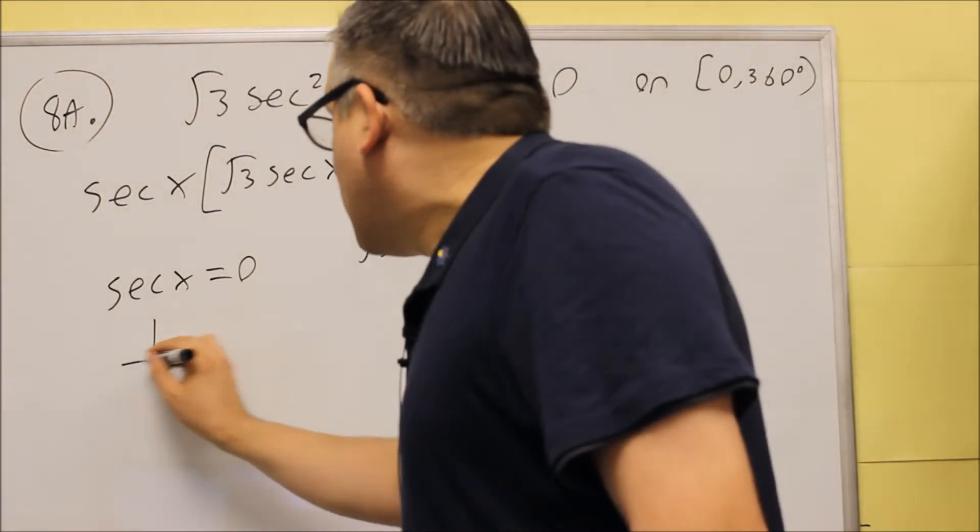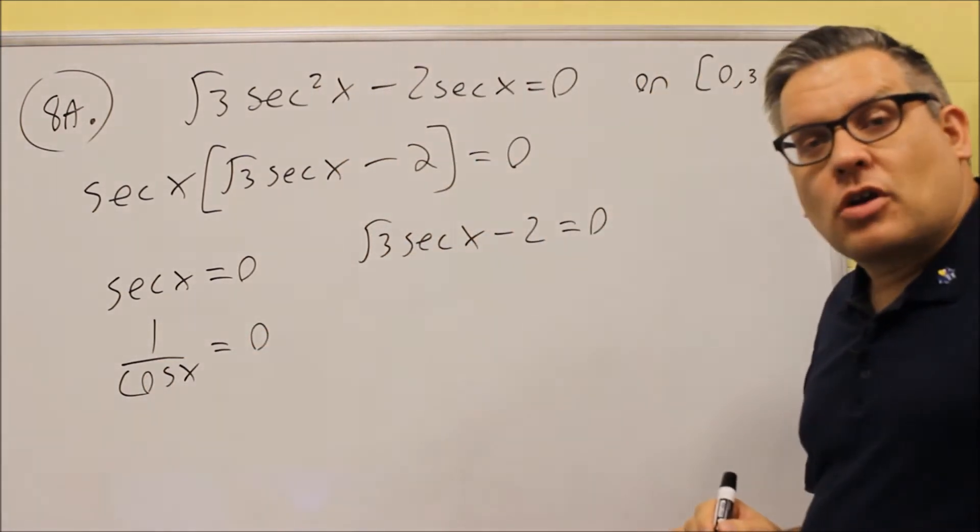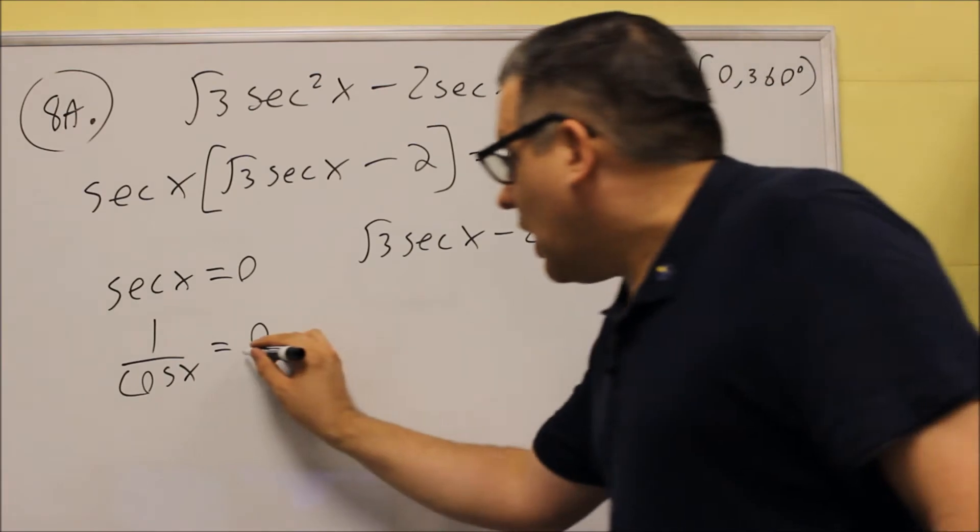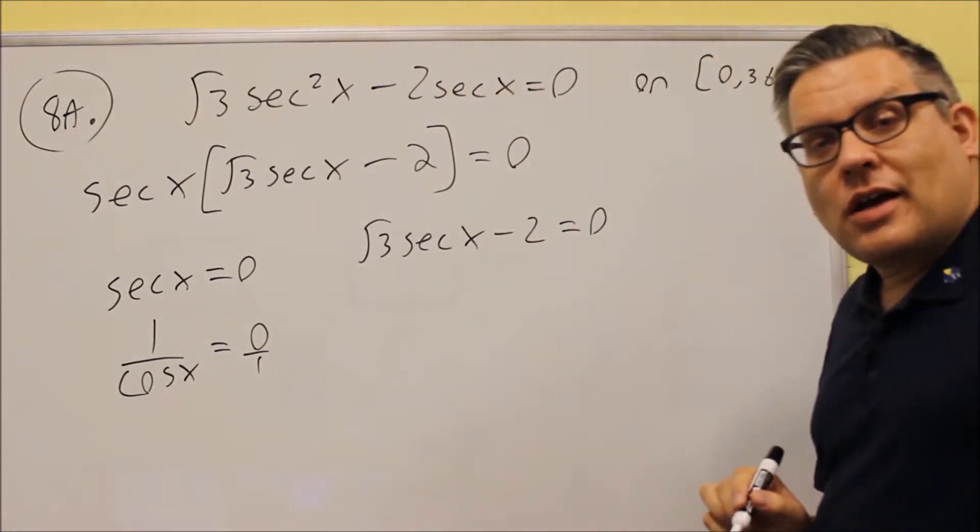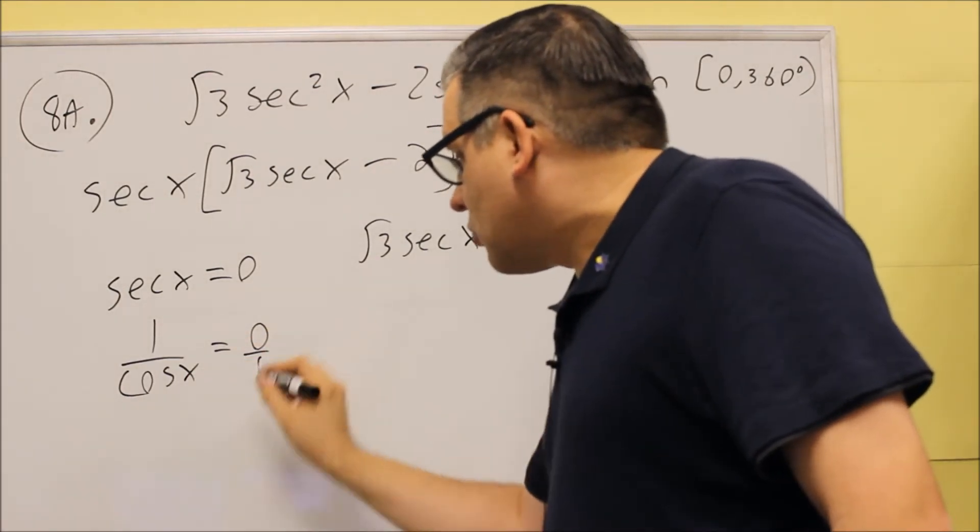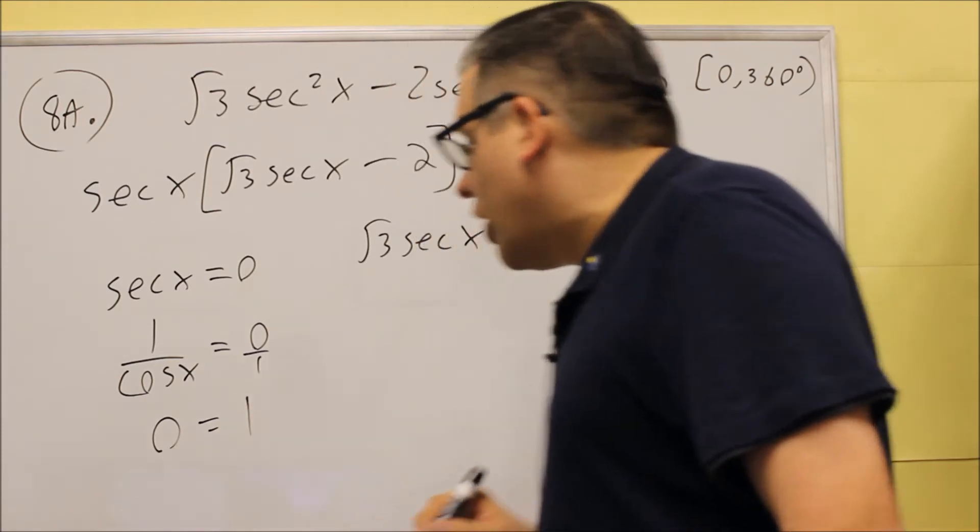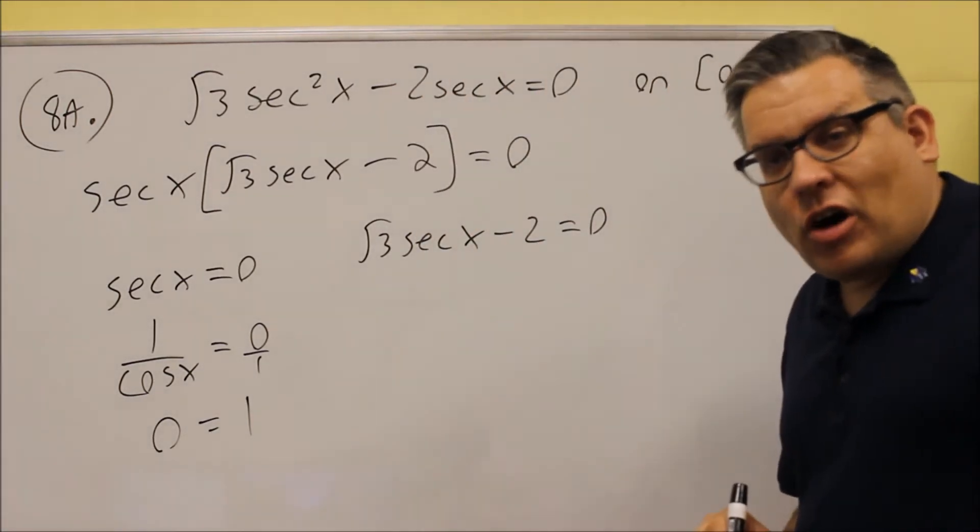Now secant, we want to put the identity in for that. Secant is the same thing as one over cosine, and we are going to cross multiply on this one. Now if we cross multiply this, zero times cosine is zero, and then we get one. So we end up with a statement that is false.